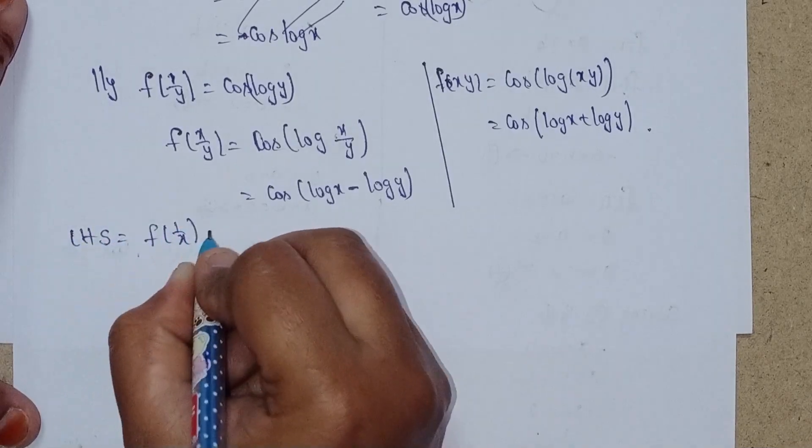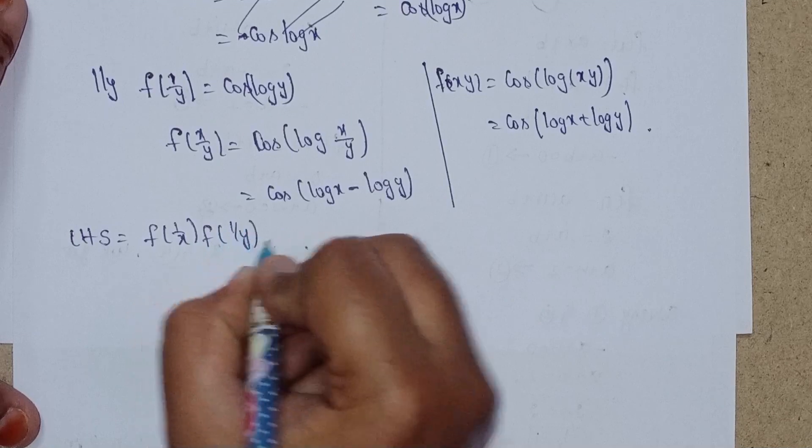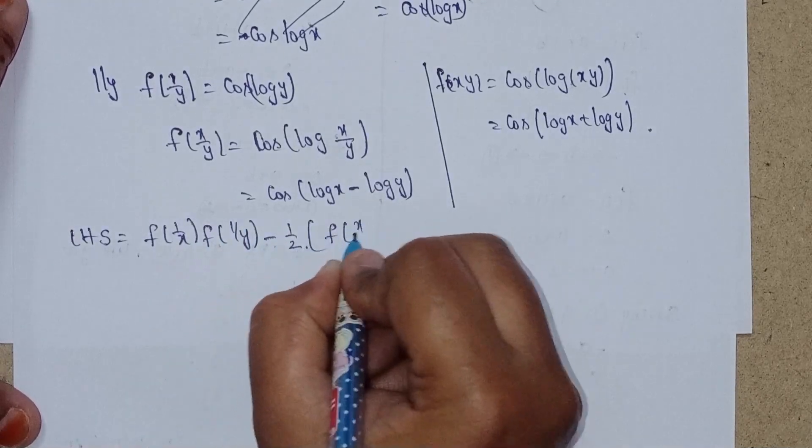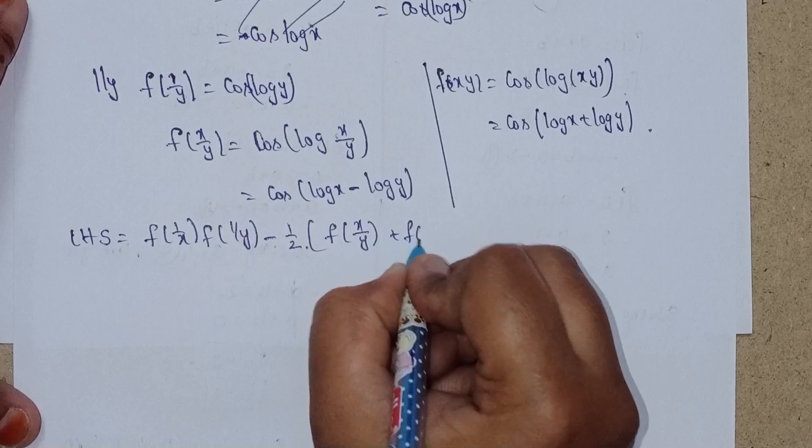LHS = f(1/x) * f(1/y) - 1/2 * [f(x/y) + f(xy)].